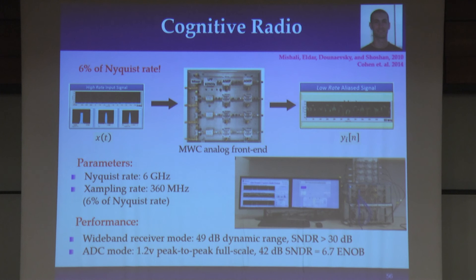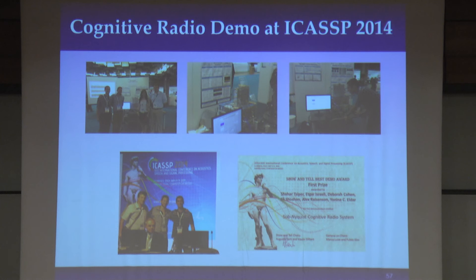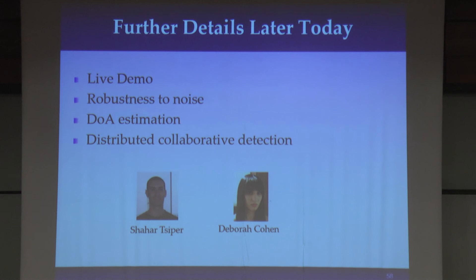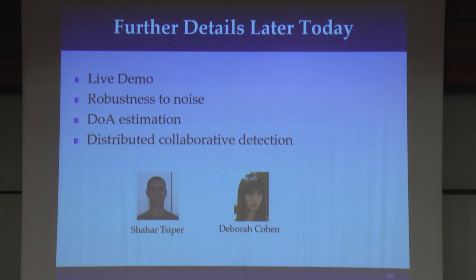Here is the demo that Chakar is going to show us: the actual board that Chakar and the engineers developed in the lab, which samples at 6% of the Nyquist rate and recovers in real time even from this very low sampling rate — this demo won first place at ICASSP last year. We'll also hear extensions about it later today, including how we could make this robust to noise — there is nice new theory developed to make the MWC more robust. We'll also talk about how we could use the MWC to actually recover direction of arrival, which is a nice example involving the undergraduate students.